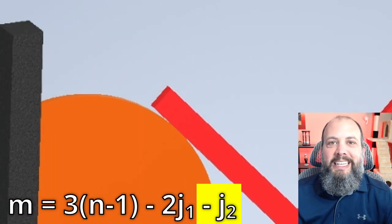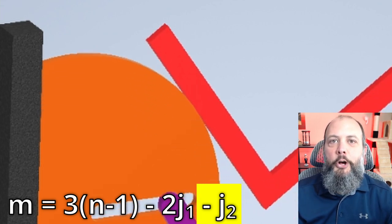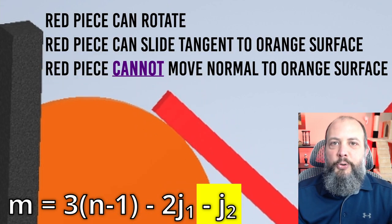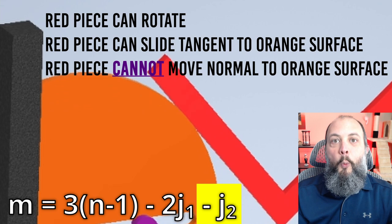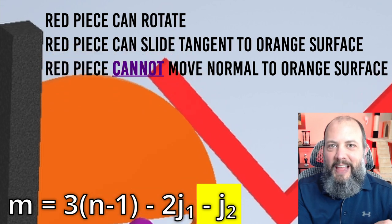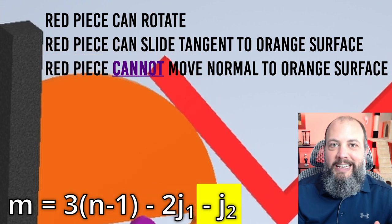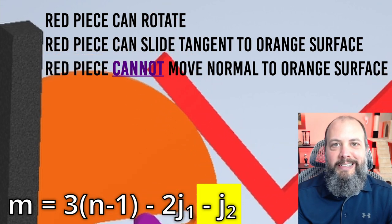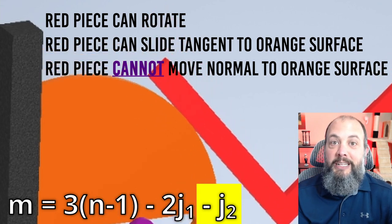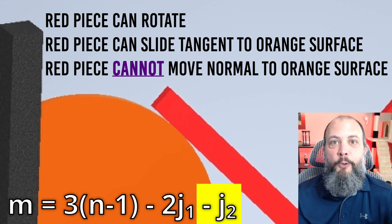A roller joint would be considered a j₂, also called an upper pair. These sort of joints only restrict motion in one direction while still allowing sliding in the other direction or rotation. So in that case, you only subtract one times the number of j₂ joints because they each only restrict motion in one direction.